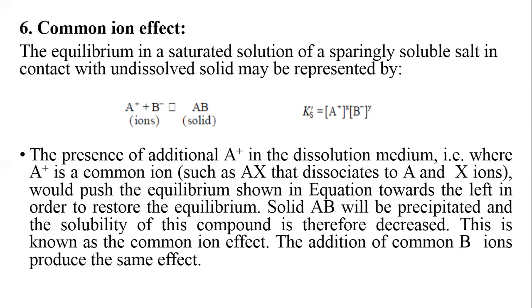This is known as the common ion effect. The addition of common ion B produces the same effect: A plus B produces AB. This equation represents the effect of concentration of both ions A and B on solubility.